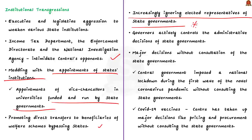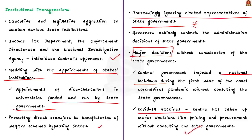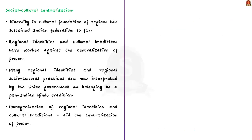The union government through the institution of governors actively controls administrative decisions of state governments. The central government also takes major decisions without consultation with states — for instance, imposing a national lockdown during the first wave of COVID-19 without consulting state governments. Similarly, with COVID-19 vaccines, the center made major decisions on pricing and procurement without consulting relevant state governments, all of which have led to further centralization of power.